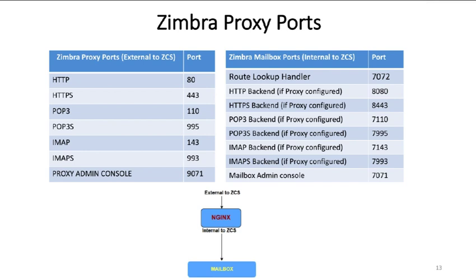These are the common proxy ports. For HTTP, the default port is 80; for HTTPS, 443; POP3 uses 110; POP3S uses 995; IMAP uses 143; IMAPS uses 993. The proxy admin console port is 9071. The route lookup handler port is 7072. When proxy is configured, the HTTP backend port is 8080 and the HTTPS backend port is 8443 — these are the ports your mailbox listens on. For POP3 the backend port is 7110; for POP3S it is 7995; for IMAP it is 7143. From outside the network, you must go through the proxy; internally you can connect directly to the mailbox on these ports.